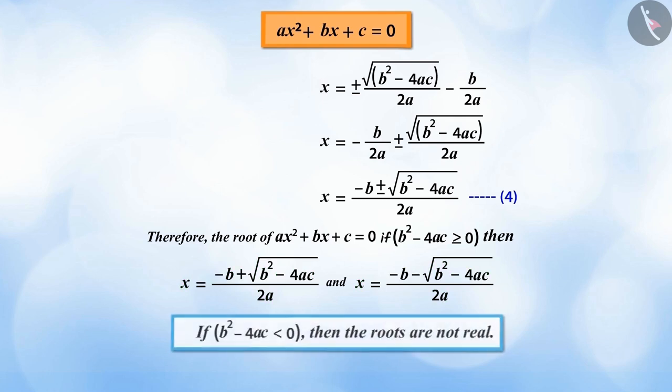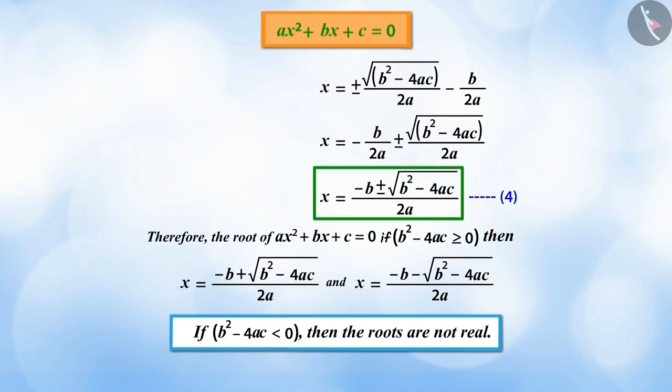And if b to the power of 2 minus 4ac is smaller than 0, then the real roots are not obtained. Therefore, to find the roots of any quadratic equation, we can use this formula, which is called the quadratic formula.